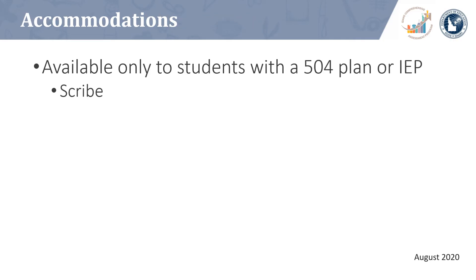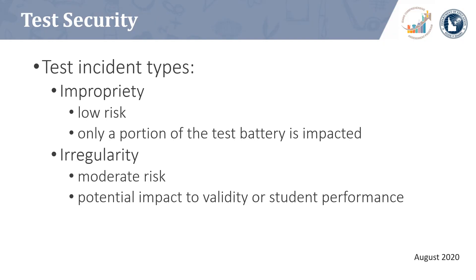Accommodations are options for IRI test administration that are only available to students with disabilities who have a documented 504 plan or IEP, and must be documented prior to administration. Scribe is the only accommodation available for the IRI. Most students will be able to access the IRI assessment through the use of the universal tools and designated supports already outlined. For information regarding accommodations, see Table 4 in the IRI TAM. Test security is an important consideration for proctors and administrators both before and during IRI administration.